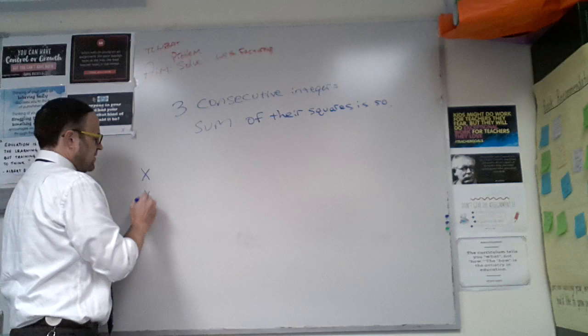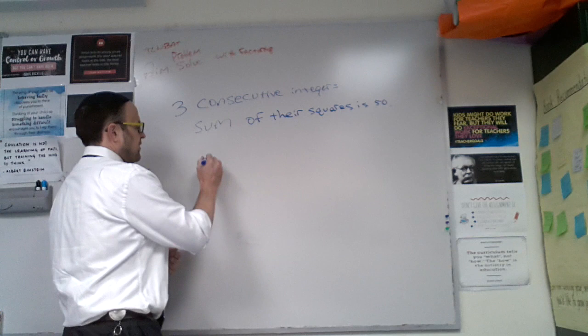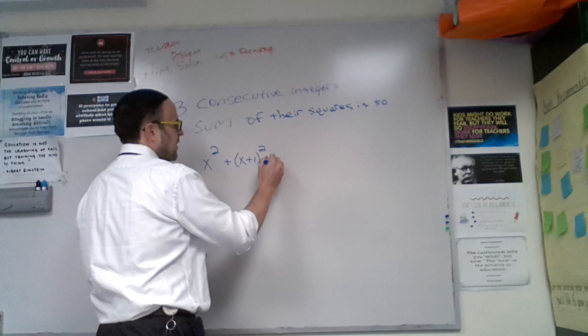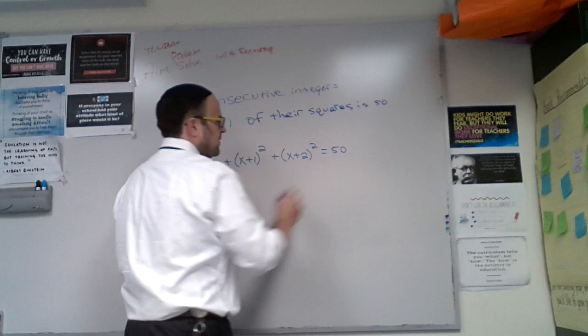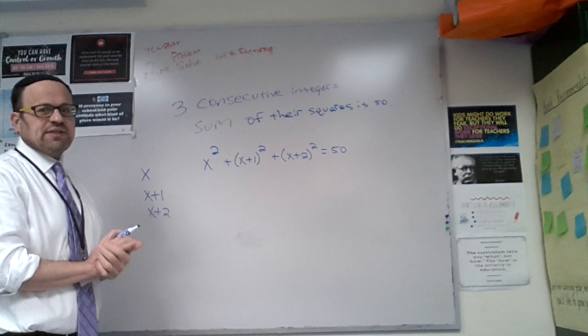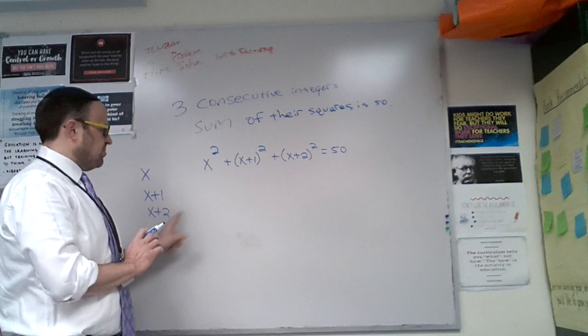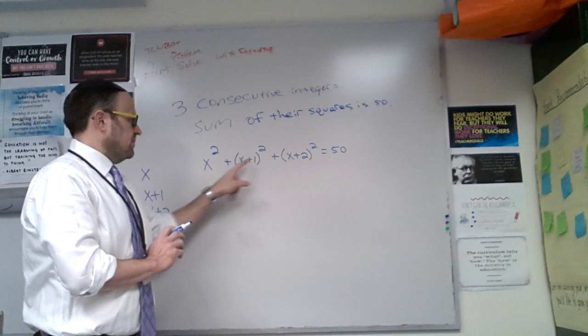Again, three consecutive integers, x, x plus 1, and x plus 2 is always a good way to start, and I'm telling you that the sum of their squares. So what is that telling you? It's telling you x² + (x+1)² + (x+2)² = 50. Again, we're just translating words into symbols. I have my algebraic representation of those three integers, and then I can say that their squares are x², (x+1)², and (x+2)². And now I'm taking the sum, addition equals 50.